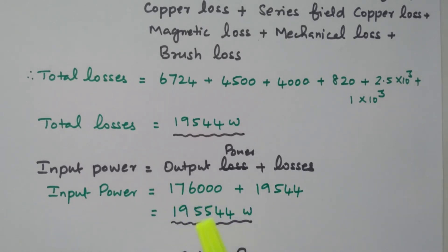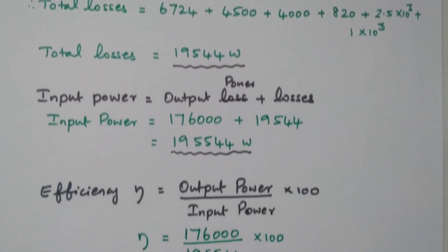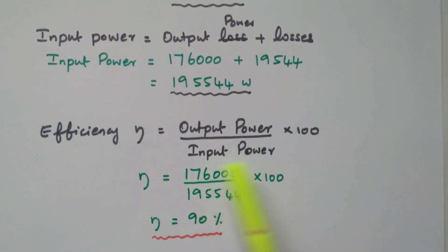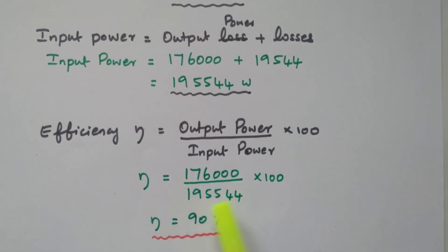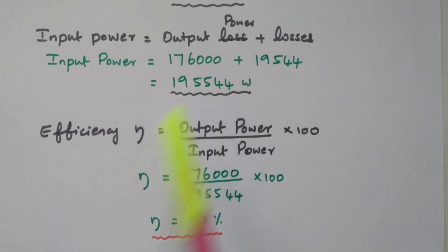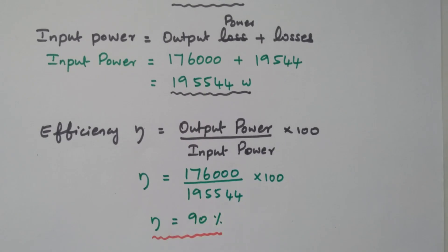Now we have output power and input power, so we can calculate the efficiency. Efficiency equals output power divided by input power, multiplied by 100. Output power is 176,000 divided by input power 195,544, into 100. By simplifying this, we get 90 percent.